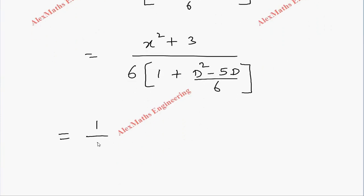This will become [1 + (D² - 5D)/6]^(-1) and the remaining algebraic expression x² + 3.